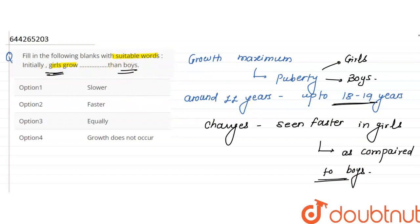So our answer is the first option, option number 2, faster. Initially, girls grow faster than boys. This is our correct answer.